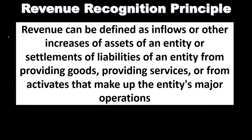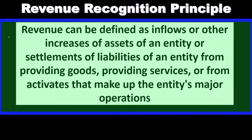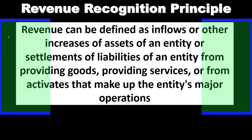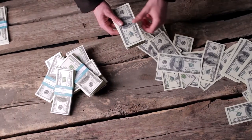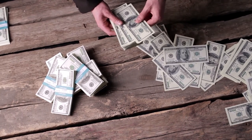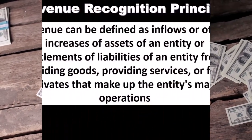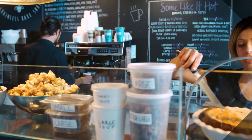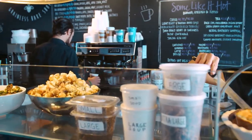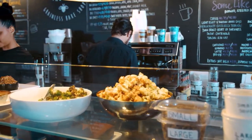In general terms, the revenue recognition principle states that we're going to recognize revenue when it has been earned, as opposed to when cash is received. That's probably what most people would say as a revenue recognition principle. But we want to be very specific and apply this to different types of businesses — some that sell goods or inventory, and others that provide services.